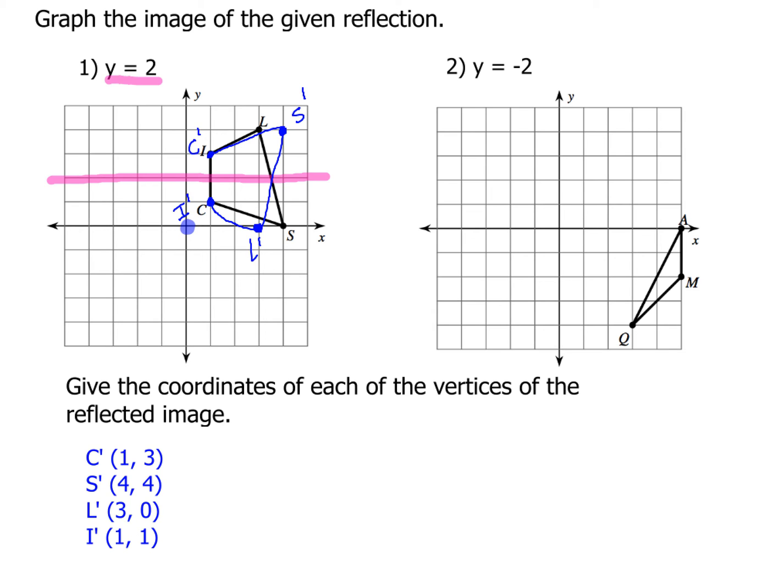Now what we're going to do here, we're going to have for number two, we're going to try the reflection over the line y equals negative two. So again, first thing, go ahead and draw a horizontal line at y equals negative two. And I'm going to go ahead and mark that. And then we're just going to go ahead and do our reflections over each one of these spots.